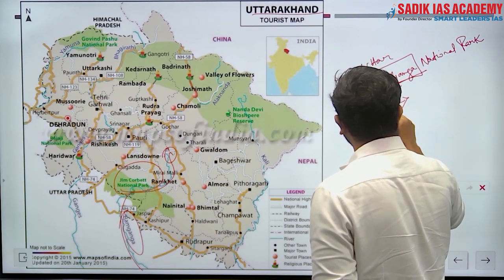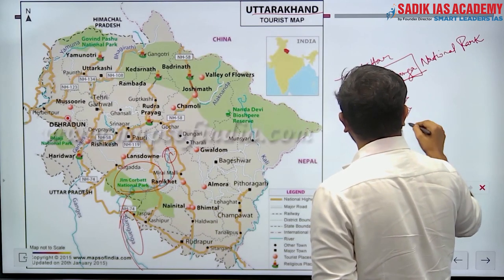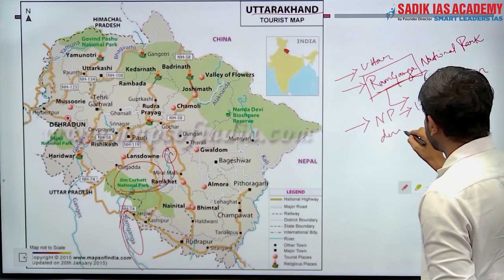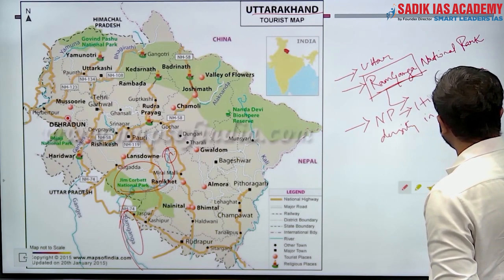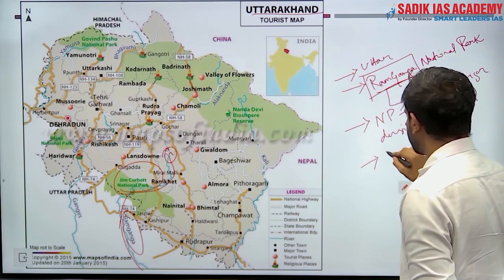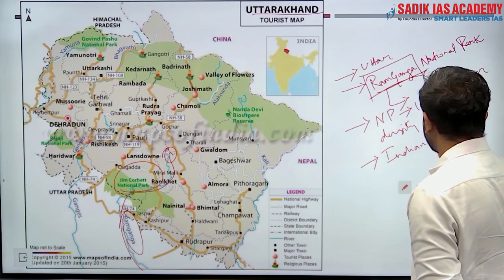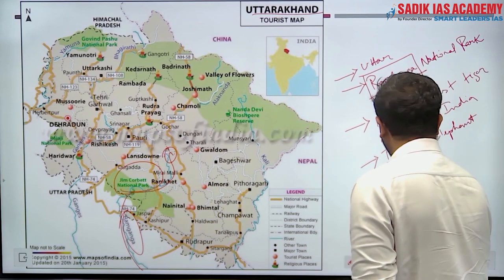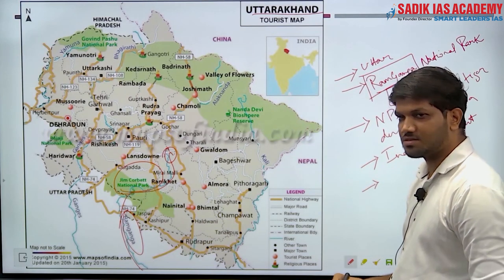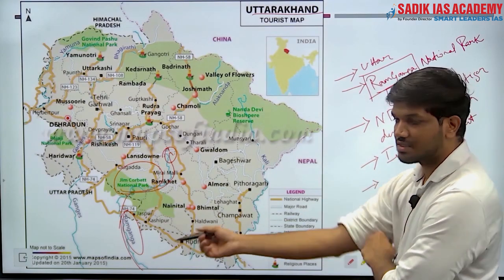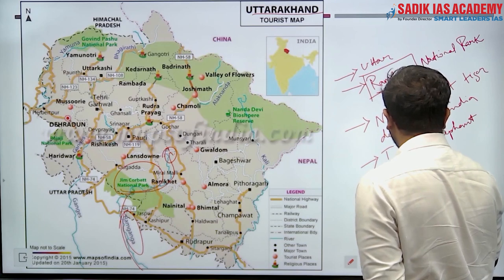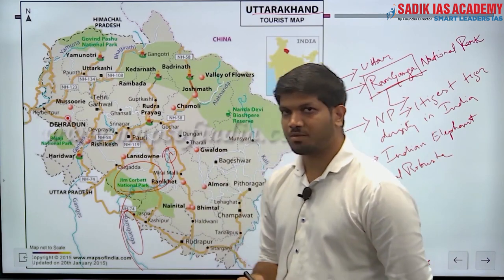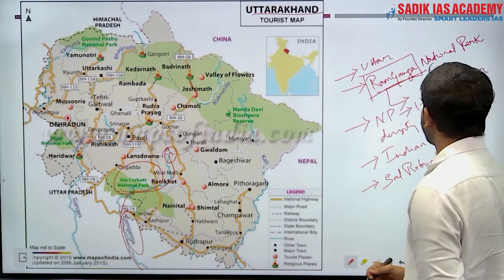Jim Corbett National Park has the highest tiger density in India. It also hosts the Indian elephant as a flagship species. The most dominant tree species here is Sal — specifically Sal robusta — which dominates over 75% of the national park.